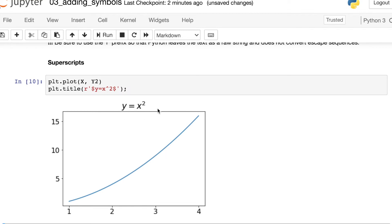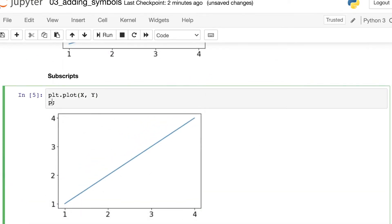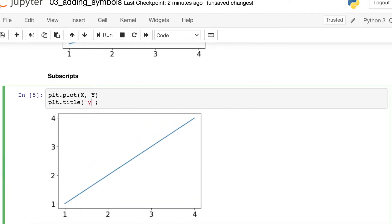So what if we wanted to do a subscript instead? Let's say we have this title, Y equals X underscore I.